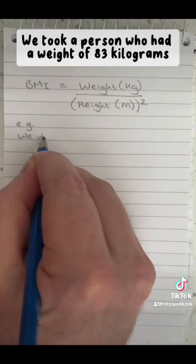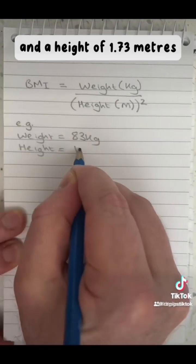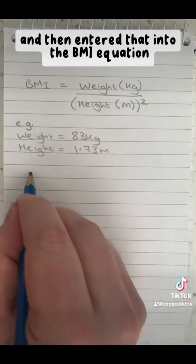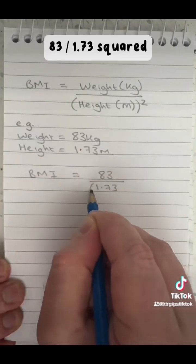If we took a person who had a weight of 83 kilograms and a height of 1.73 metres and then entered that into the BMI equation: 83 divided by 1.73 squared.